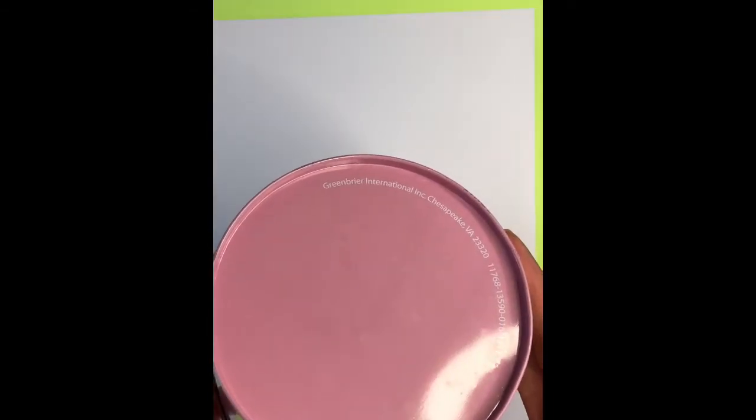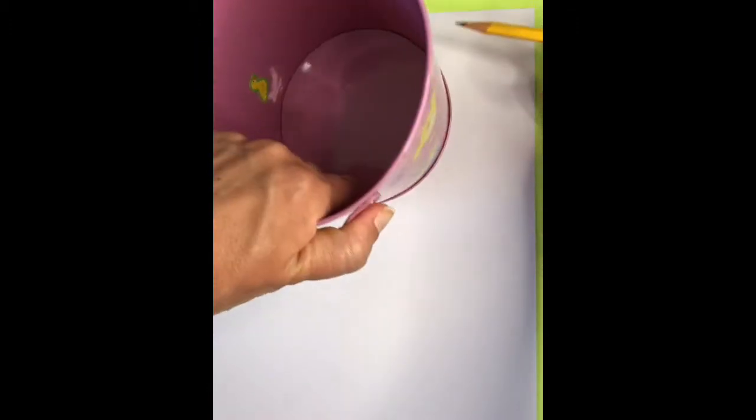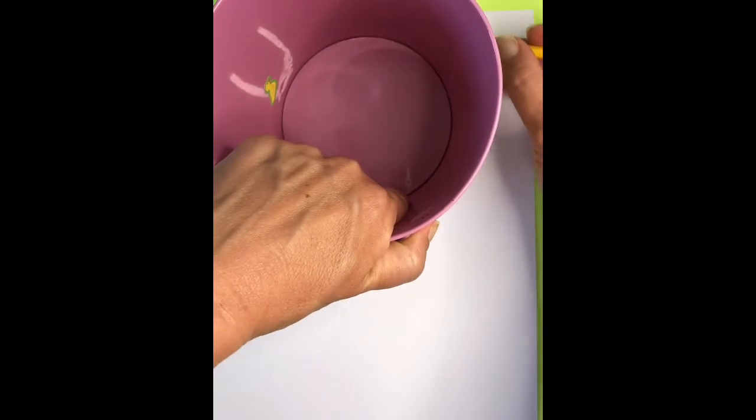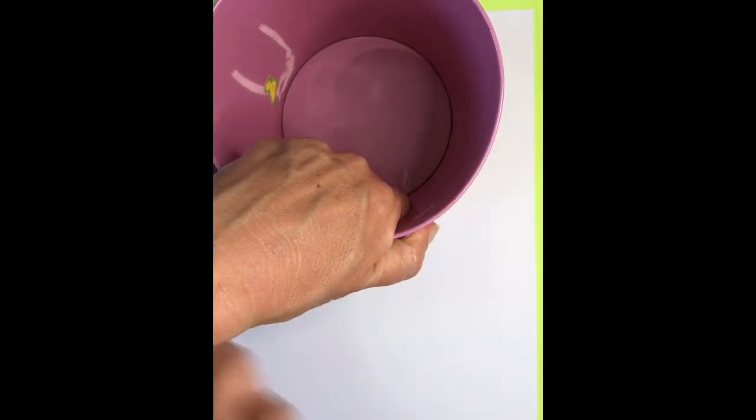To start off, we're going to be finding a really big circle. So I found this bucket and we're going to use this to trace the head. We're going to go near the top of your paper, take your pencil, and trace around the edge of the circle.